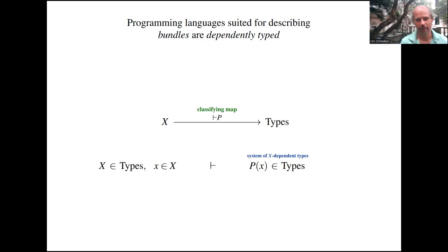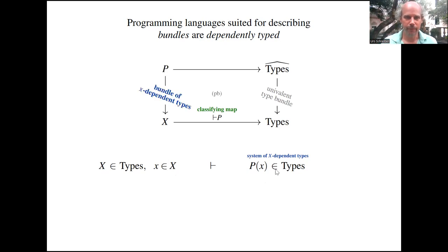If you just open textbooks that explain these constructions, you will find many hundreds of pages before you finally have that braid representation. So it might seem implausible that this serves as the foundation of a quantum programming language. But I want to argue here that actually the opposite is the case if you make use of some recent insights into the foundations of programming languages. Namely, programming languages that are suited for describing bundles in the mathematical sense are dependently typed. In a dependently typed language, you are allowed to look at situations where you have a given base type X, and for every term in that base type, you get another type parameterized dependent on that term, P of X.